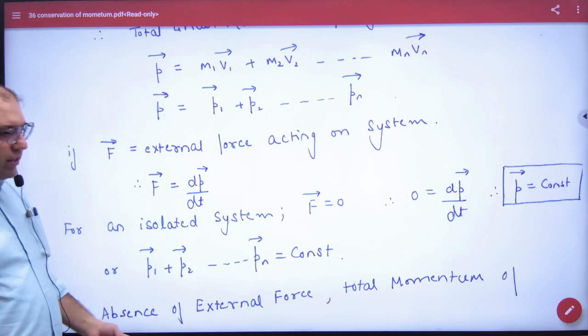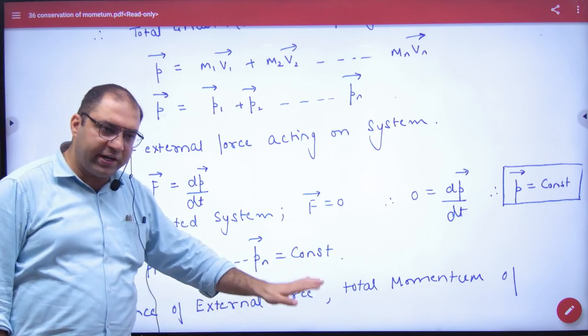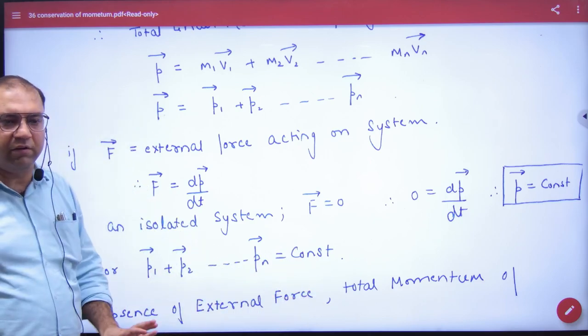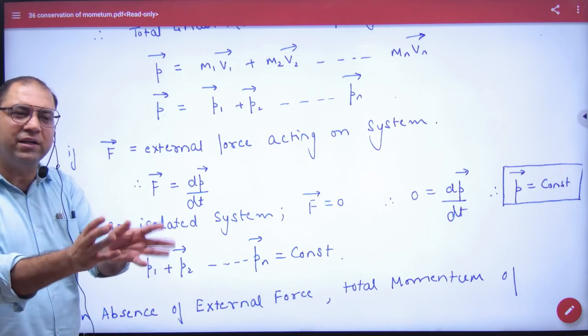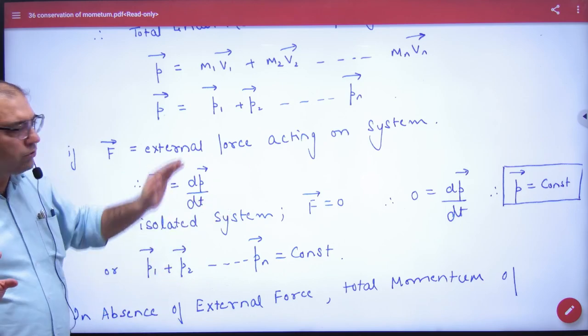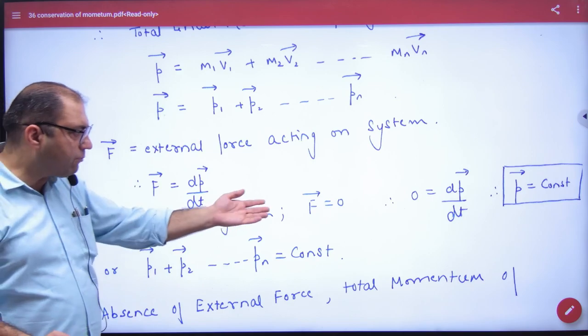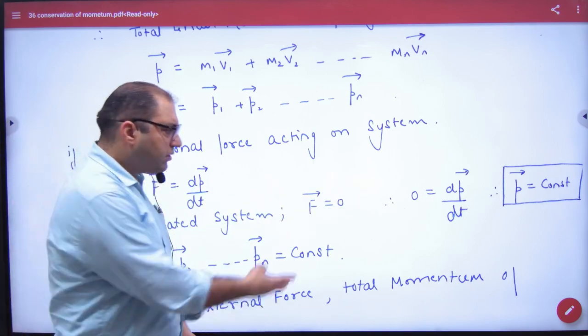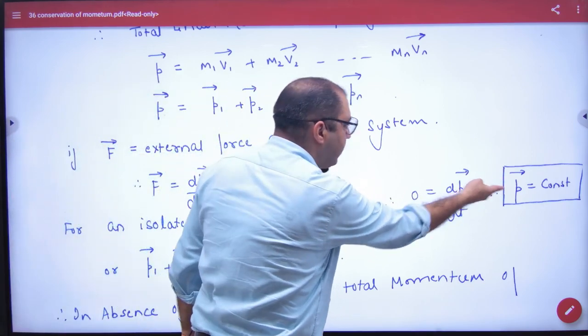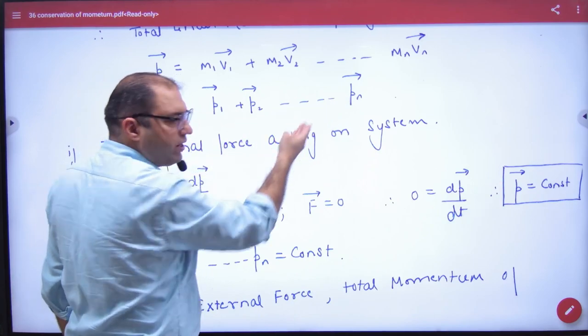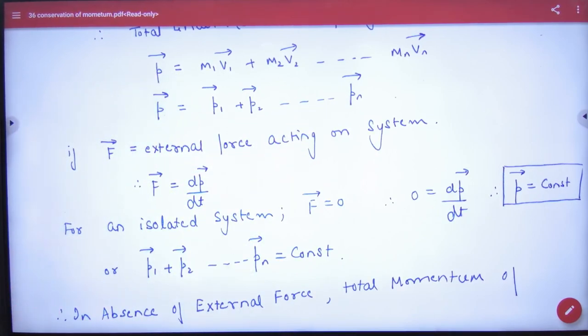So you have to say that the total momentum is constant in the absence of external force. So that's the way to write. So this is n number and then the other thing is constant. You have to write this thing. So p1 vector, p2 vector up to pn vector. I will write two or three numbers so at least you will get to know what to write.